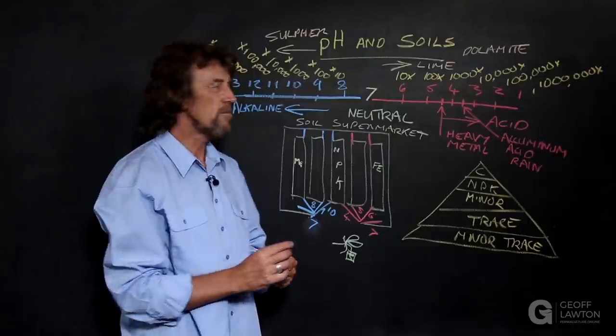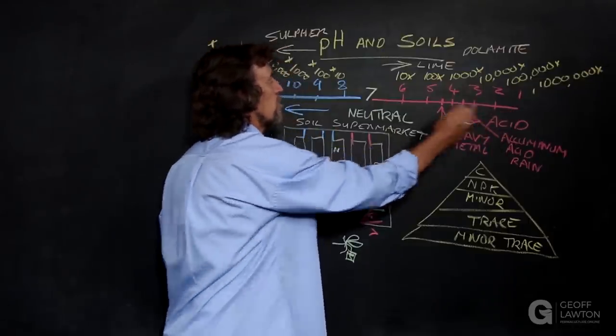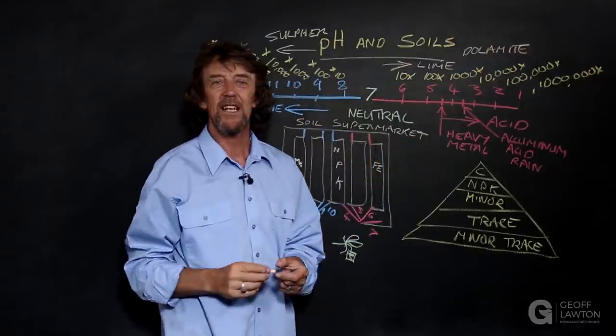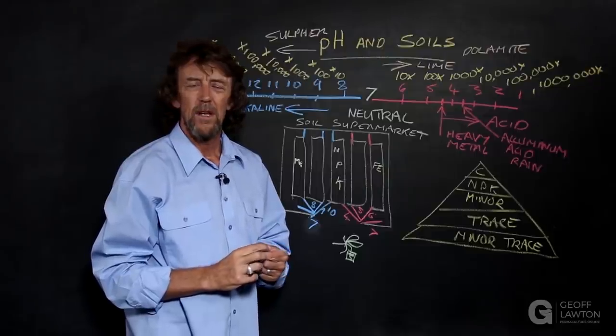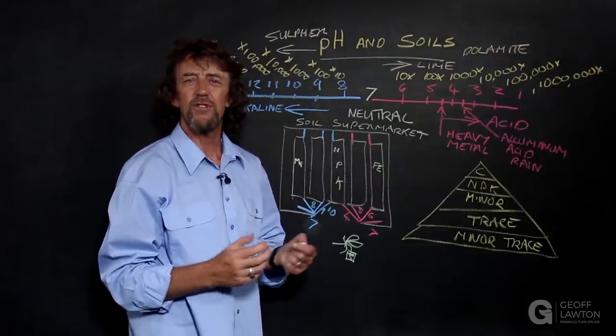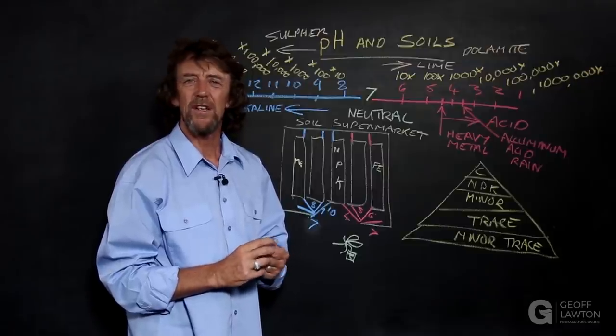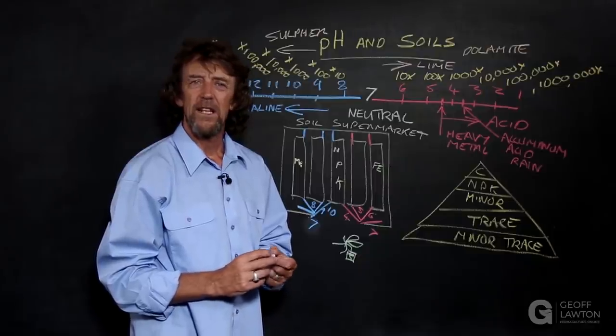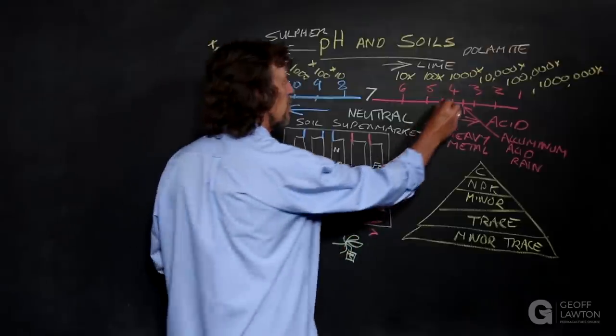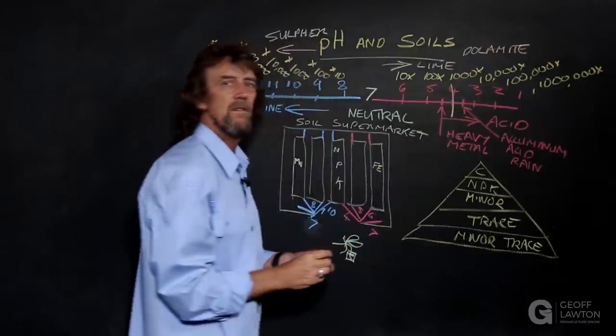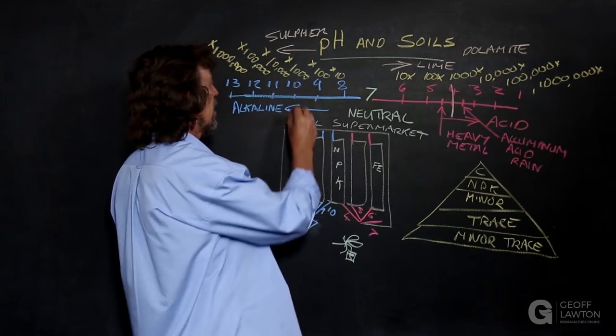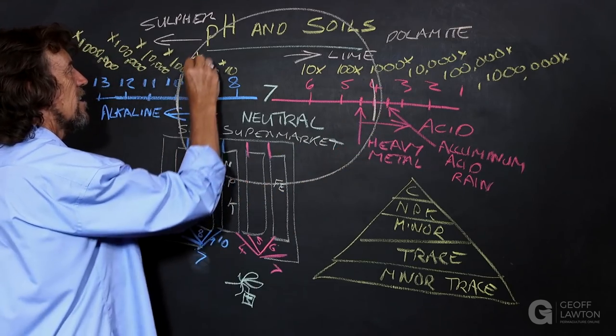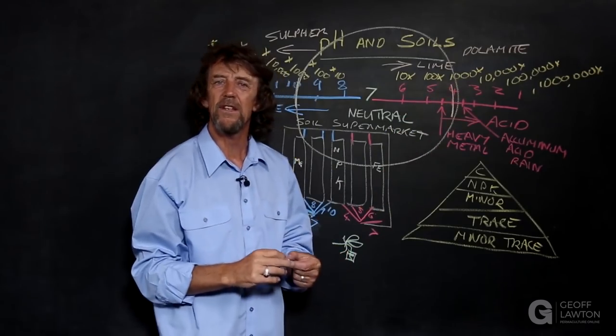The pH scale goes from—well, it actually goes from 0 to 14, but I like to do 1 to 13. That makes 7 exactly in the middle. So, on the acid side, you have citrus juice. On the alkaline side, you have baking soda and washing soda. There's very little life outside of 4 on the acid side and 10 on the alkaline side. Life exists in here. It's pretty hostile when you get outside of there.